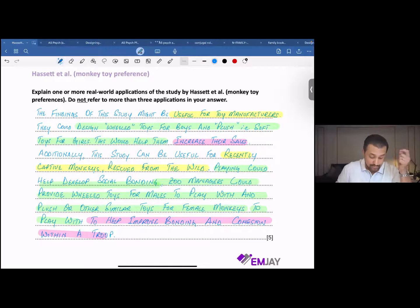Now, to help you understand this, the question over here says: explain one or more real-world applications of the study by Hassett et al., monkey toy preferences. Do not refer to more than three applications in your answer. So, this is a five-mark question, and for a five-mark question, we get 10 lines to write down the answer.